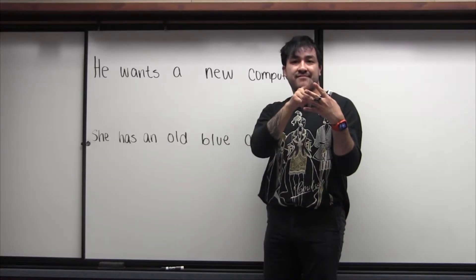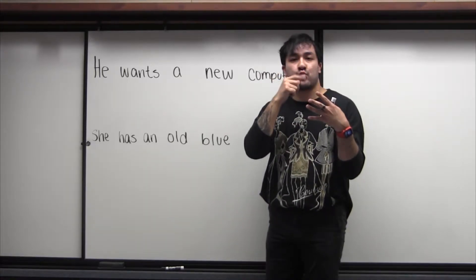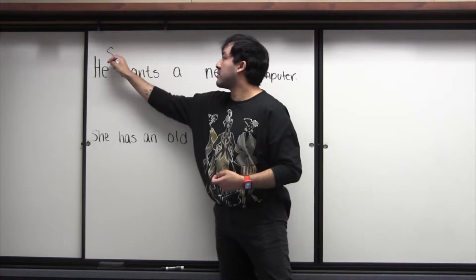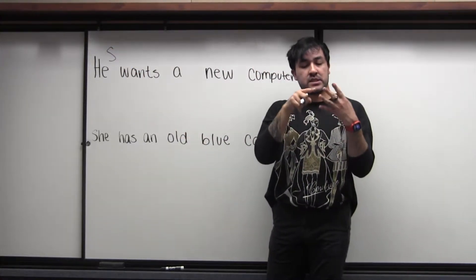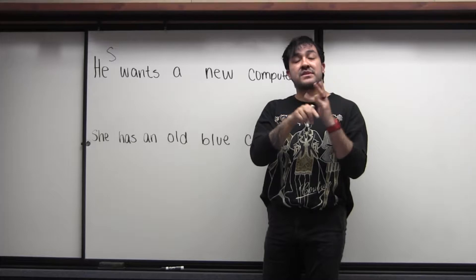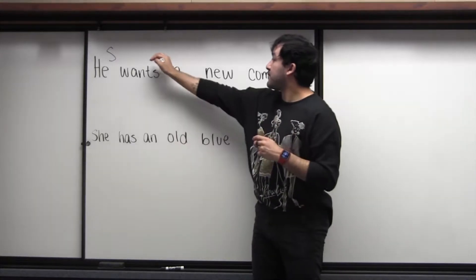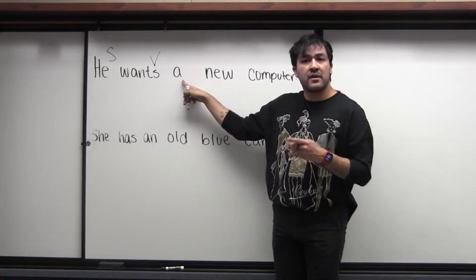So which one is he? He is the subject, right? It's the who of the sentence. So let's go ahead and write our S. What is wants? Wants is our verb. Go ahead and write our V.